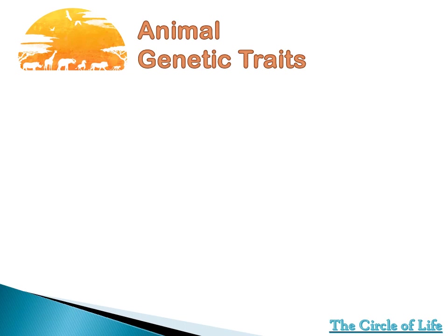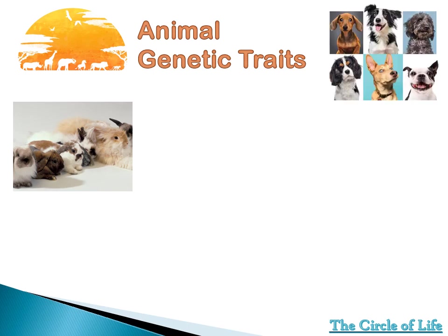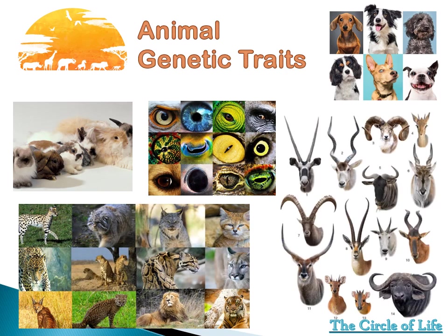Now let us have animal genetic traits. Animals, just like humans, are also living things. Each animal is different from each other, yet they do carry DNA or a genetic trait that is being passed on from a parent to its offspring. We have on the picture here a rabbit. Rabbits come in many different colors, and of course they inherited it from their parent. Same thing with dogs — dogs do have different breeds, and of course they got it from their parent. A few other examples of animal traits are their eyes, their skin pattern, and even their horns. These are just a few out of so many characteristics that animals have.